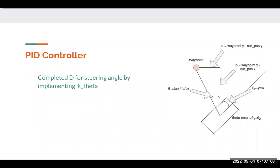When it comes to completing the D component for the steering angle, the way we did this is by implementing the error. What we first did was calculate the yaw of the vehicle with respect to the vertical axis, and then calculated the tan inverse of A over B, A being the difference between the y's of the waypoint and the current position of the vehicle.